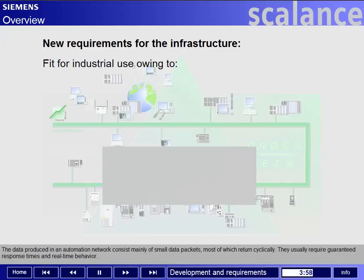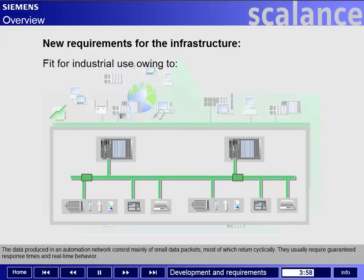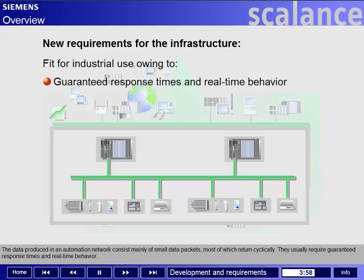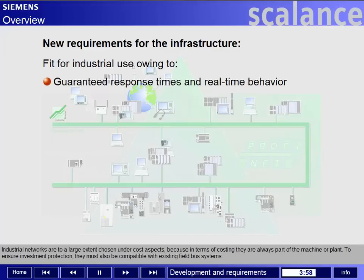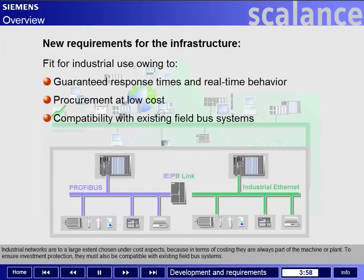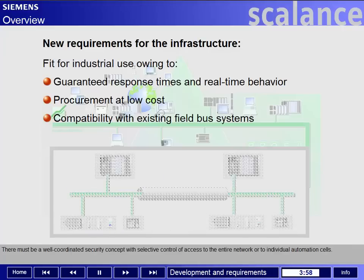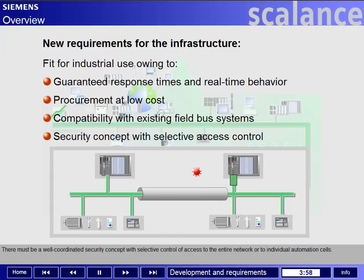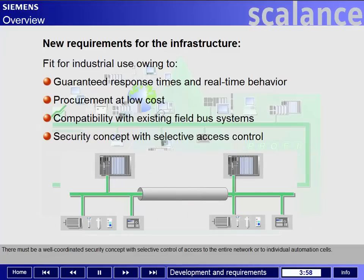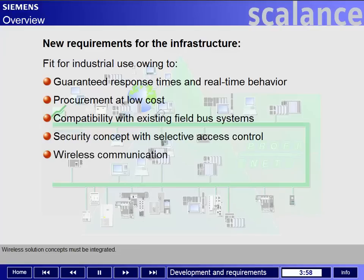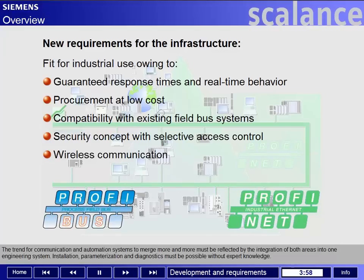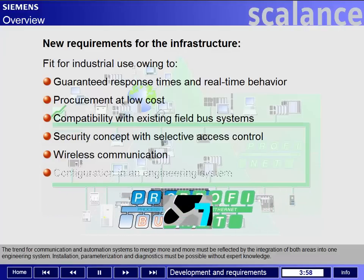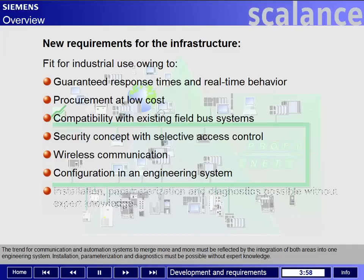The data produced in an automation network consists mainly of small data packets, most of which recur cyclically. They usually require guaranteed response times and real-time behaviour. Industrial networks are to a large extent chosen under cost aspects, because in terms of costing they are always part of the machine or plant. To ensure investment protection they must also be compatible with existing field bus systems. There must be a well-coordinated security concept with selective control of access to the entire network or to individual automation cells. Wireless solution concepts must be integrated. The trend for communication and automation systems to merge more and more must be reflected by the integration of both areas into one engineering system.